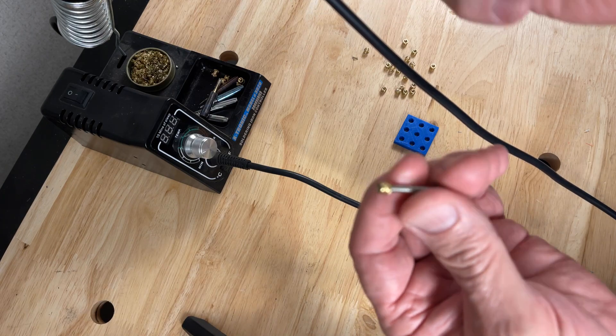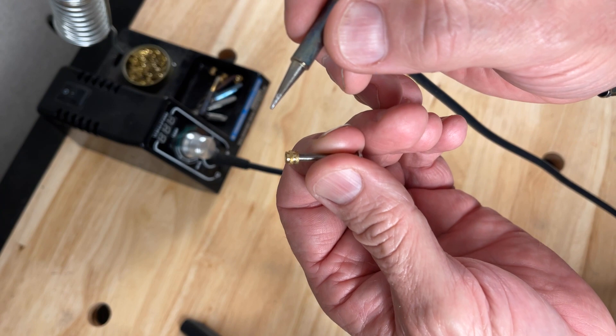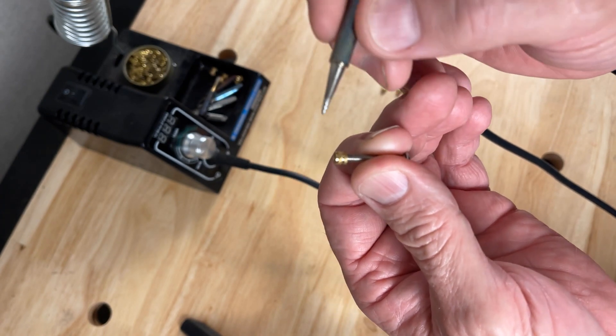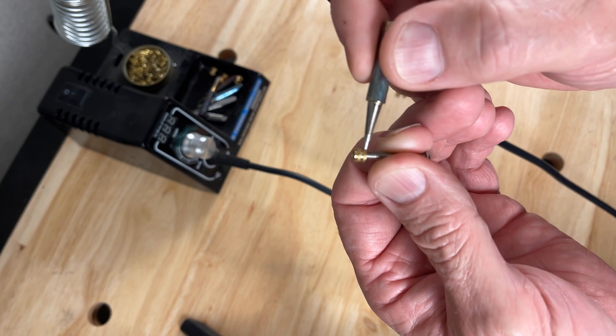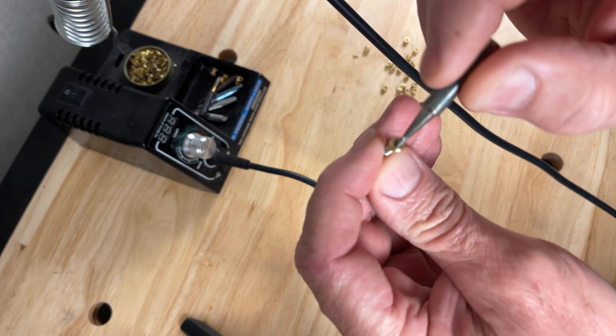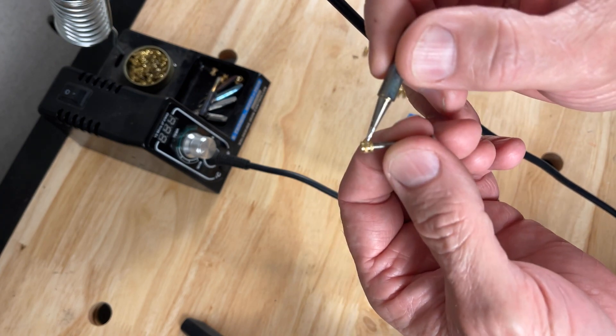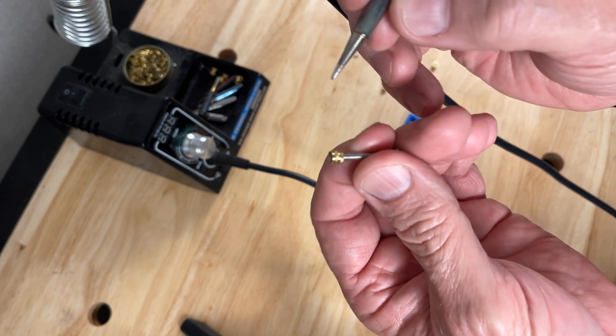We'll use this here as a pointer. These are the standard on Zero G Mercury One. They are M3 by 5 by 4 heat set, which means M3 threads, 5 millimeter external diameter, 4 millimeters in depth.